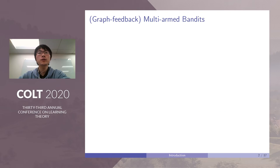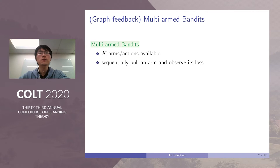Let me start by introducing what graph feedback multi-arm bandit's problem is. For a classic multi-arm bandit problem or MAB, there are K arms or equivalently K actions available. As a learner, we sequentially pull an arm, observe and suffer its loss.